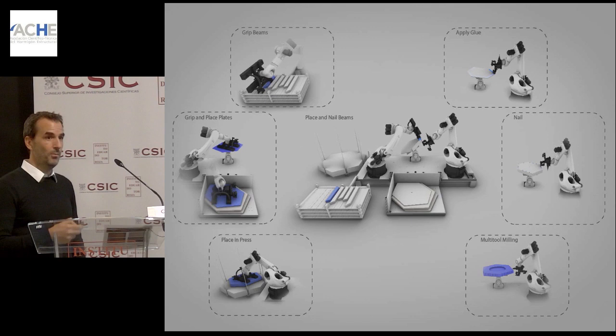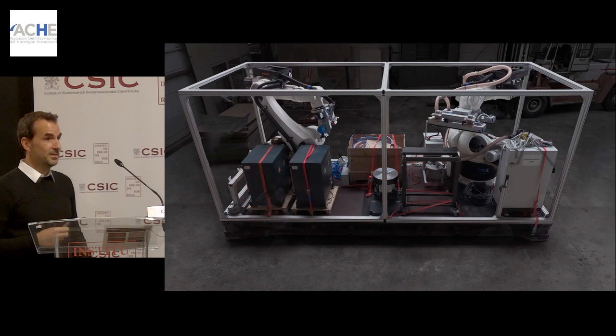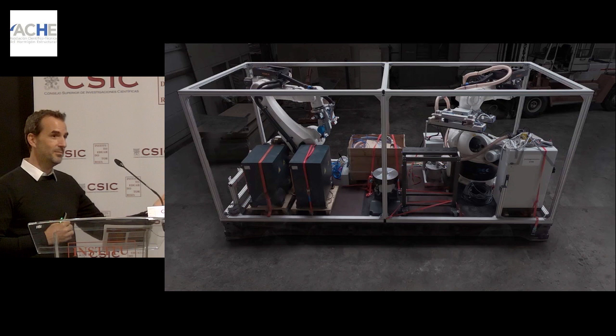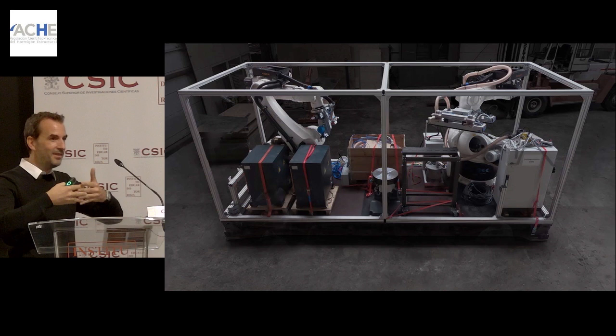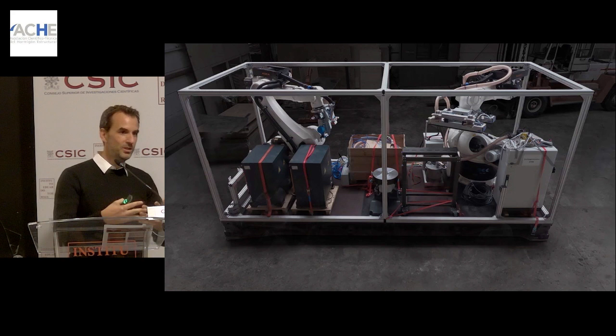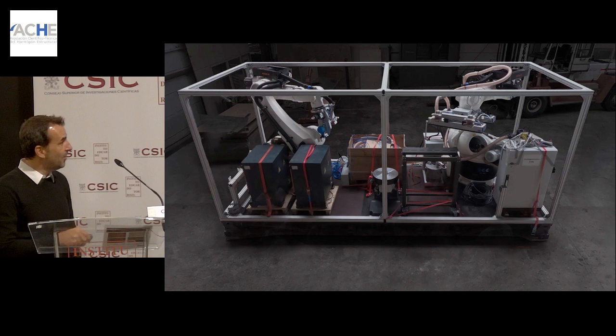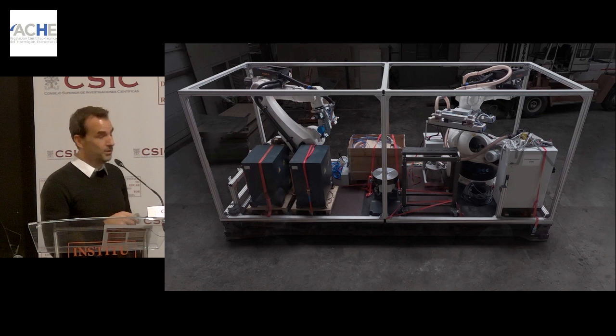This is a nice example of co-design because we design the building system, the structural system, and the production system at the same time — and it only works if done in feedback with each other, not relying on existing technology. This is our second-generation timber manufacturing platform. It sits on a regular container platform so you can take it to any timber manufacturer, it's transportable, and you could even use it on site.